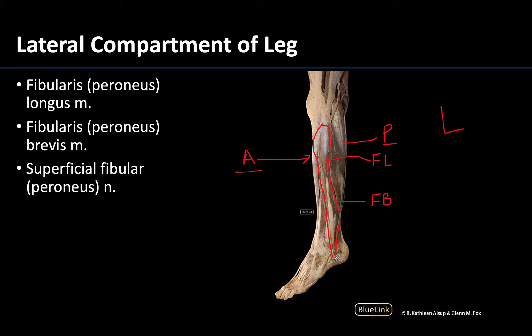The superficial fibular or peroneal nerve innervates the lateral compartment of the leg. What you can see here is the common fibular or peroneal nerve coming out of the popliteal fossa, diving deep and wrapping around the head of the fibula. This nerve is relatively close to the surface, making it more likely to be damaged. Just distal to the head of the fibula it splits into the superficial fibular and deep fibular or peroneal nerves.